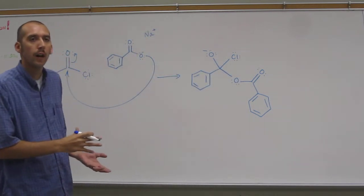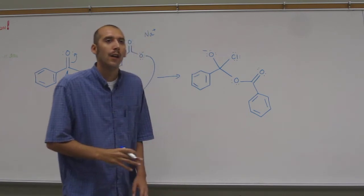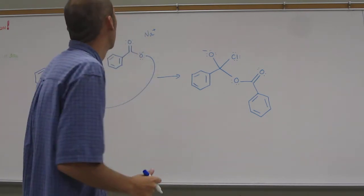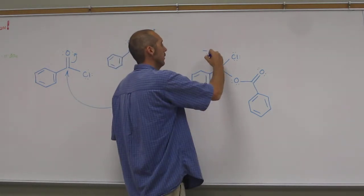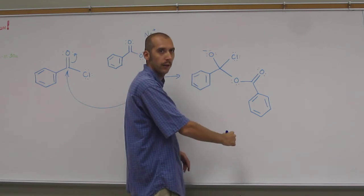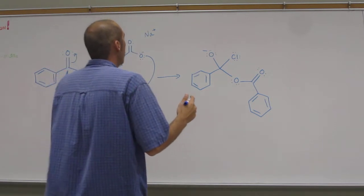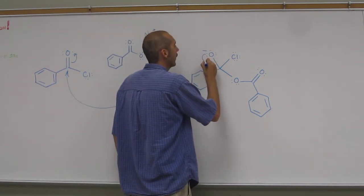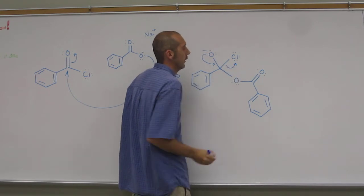So if you wanted to be super nitpicky about it, you could say put a wedge dash and then plus an enantiomer. And that would be more correct. But both of those will come back, take that like that, and kick that guy out like that.